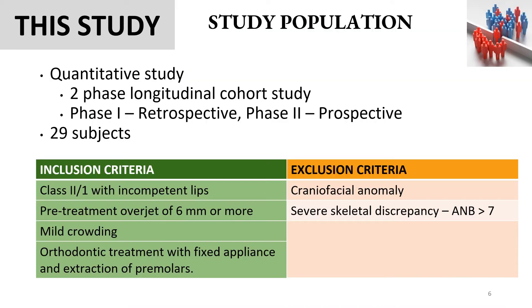This study is a quantitative study, a two-phase longitudinal cohort study. Phase 1 was retrospective, in which pre-existing good quality 3D scans were obtained, and the same patients were followed up in phase 2 of the study. Patients who had incompetent lips with a pre-treatment overjet of 6 mm or more were included in the study, and those with severe skeletal discrepancy were excluded. All of them had premolar extractions as well.